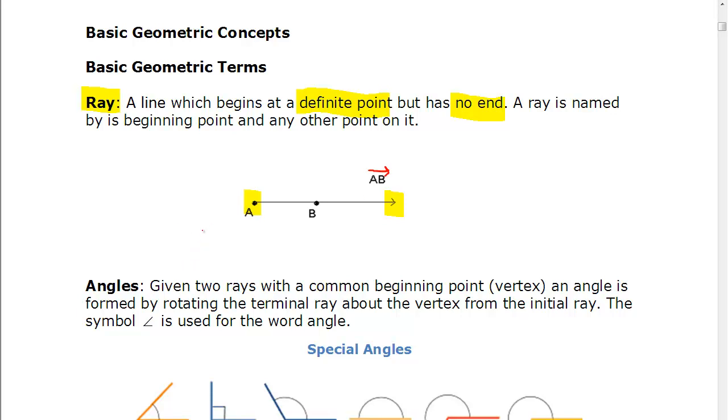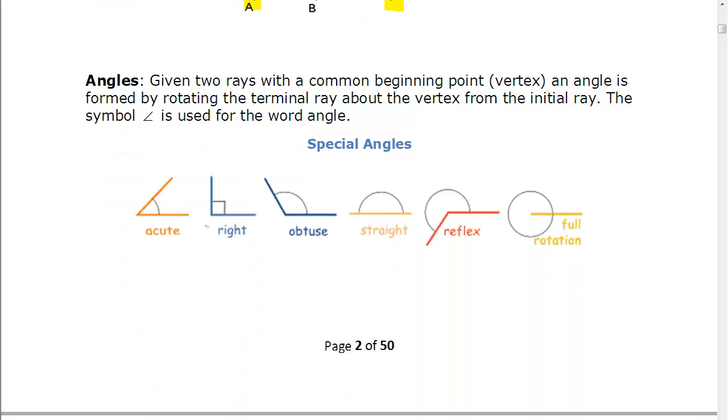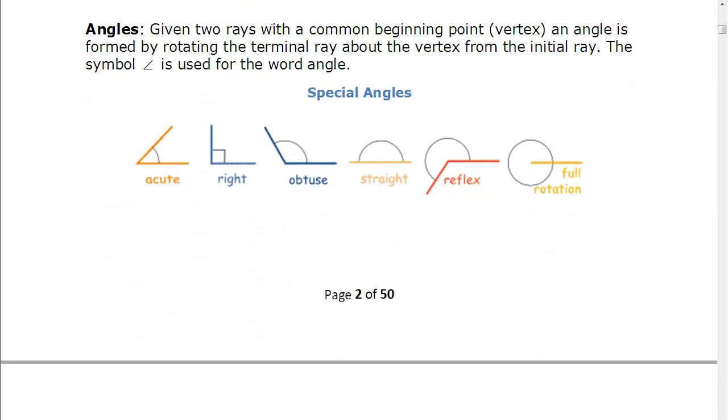Angles then are what we get if any two rays meet. So if we have two rays with a common beginning point, we call that point a vertex. And a vertex of an angle is formed by rotating the terminal ray, that means where you stop, about the vertex from the initial ray, so where you start. The symbol that looks like this, angle, is used for the word angle.